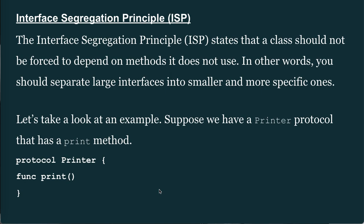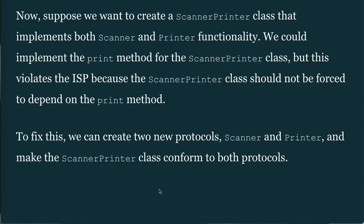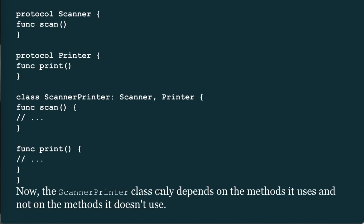Suppose we want to create a ScannerPrinter class that implements both scanner and printer functionality. We could implement the print method, but this violates the ISP because the ScannerPrinter class should not be forced to depend on the print method alone. To fix this, we create two separate protocols and make ScannerPrinter conform to both: protocol Scanner { func scan() }; protocol Printer { func print() }; class ScannerPrinter: Scanner, Printer { ... }.